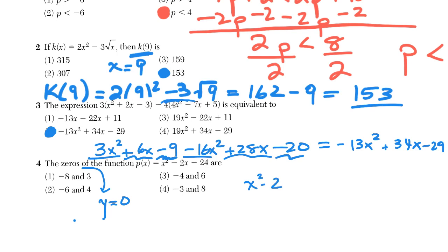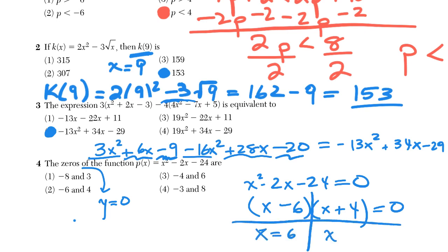Or if we want to answer this the real way, this is a factoring question. This would be our sum-product rule: what adds to negative 2 and multiplies to negative 24? It would be negative 6 and positive 4. We do our t-chart and we end up getting negative 6 and positive 4. Once again, you can verify this on the calculator table. Choice 3 is correct.